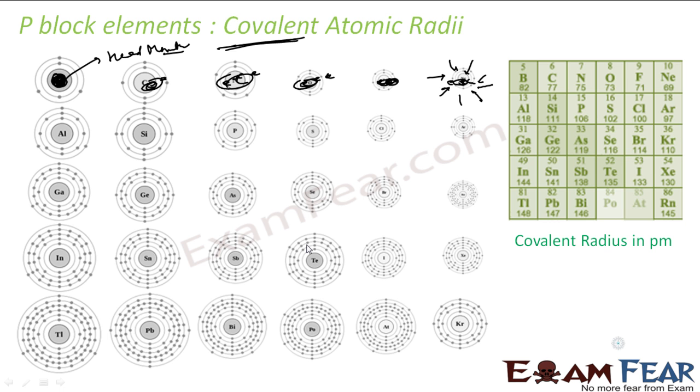If you want, you can again watch my previous videos where we discussed these in more detail. If you see, boron, carbon, nitrogen, oxygen, and fluorine, if you go from left to right, the size is decreasing: 82, 77, 75, 73, 71, 69. If you go down, 82, 118, 126, 114, 148, it is increasing. These values are in picometer.